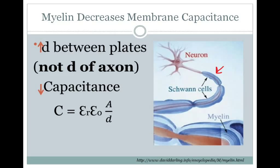So if we look at the capacitor equation, if you increase this distance D, you decrease capacitance. Now be careful — the D that we're talking about is not the axon diameter. This is a separate mechanism.